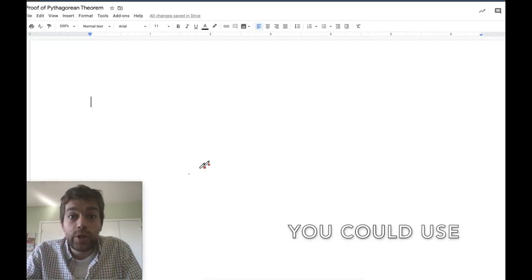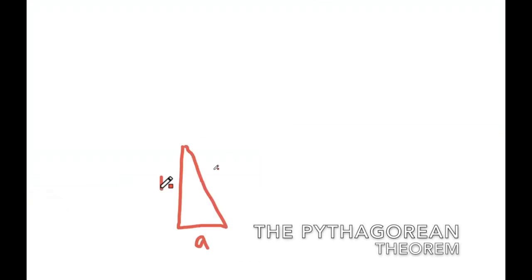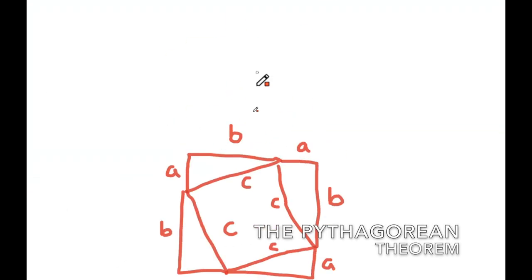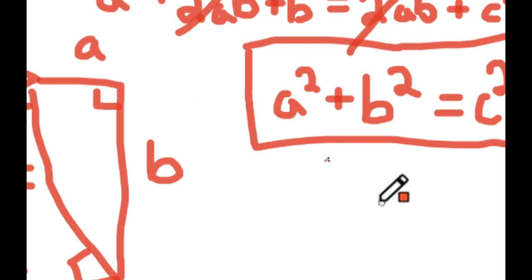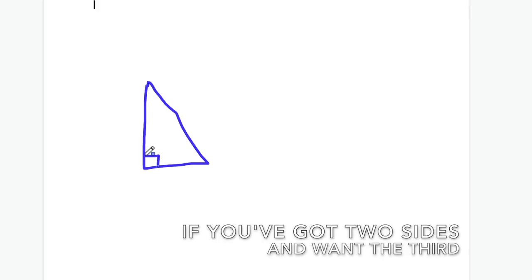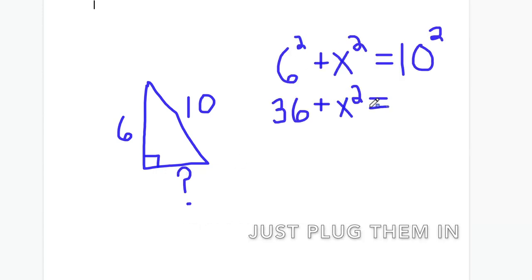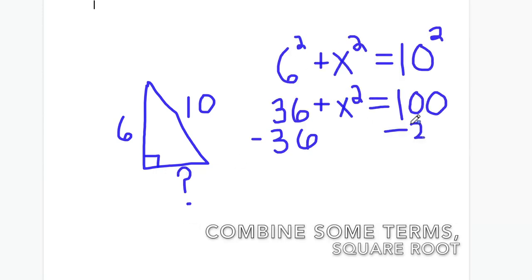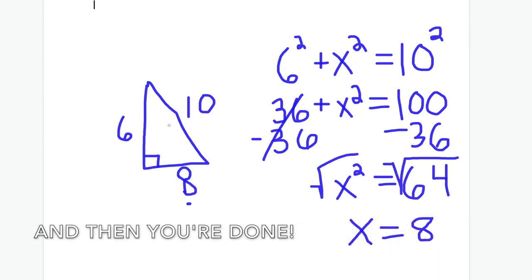You could use the Pythagorean theorem. If you've got two sides, find the third — just plug them in, combine some dumb square root, and then you're done.